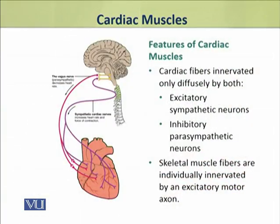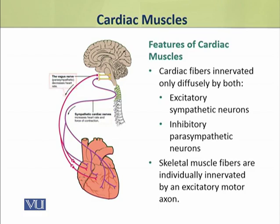The cardiac muscle fibers are innervated only diffusely by the excitatory sympathetic neurons and inhibitory parasympathetic neurons. In contrast, skeletal muscle fibers are individually innervated by the excitatory motor neuron axons.